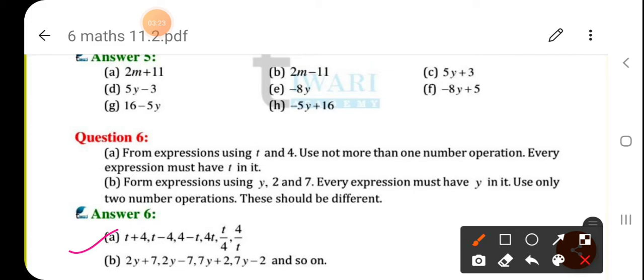So here answers are written. T plus 4, you can write T minus 4, 4 minus T, 4 into T, T upon 4, 4 upon T. These are the possibilities.